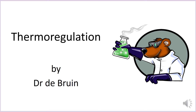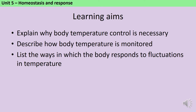This is a revision video about the control of body temperature, or as we sometimes call it, thermoregulation. This comes up in AQA GCSE Biology Unit 5, which is the homeostasis and response unit, and it's a triple only topic, so you don't need to do this if you're doing combined science. By the end of this video you should be able to explain why body temperature control is necessary, describe how body temperature is monitored, and then list the ways in which the body responds to fluctuations in temperature.